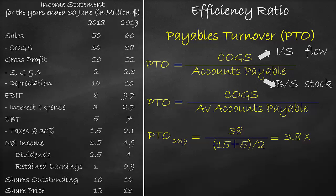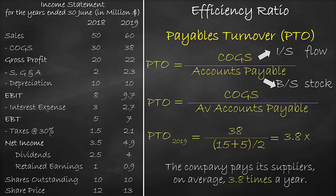The unit of the payables turnover ratio is times. It means that the company pays its suppliers, on average, 3.8 times a year. The lower the payables turnover ratio, the better.